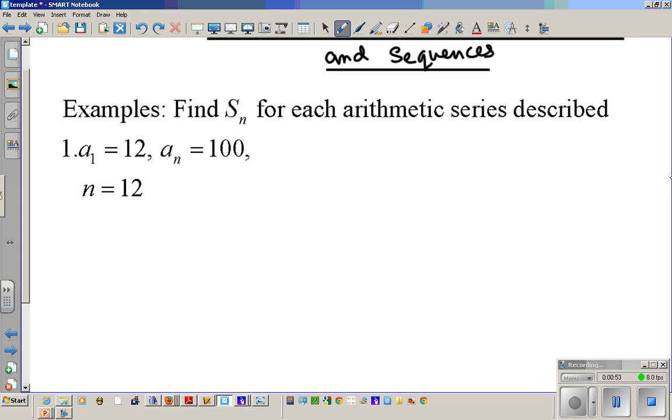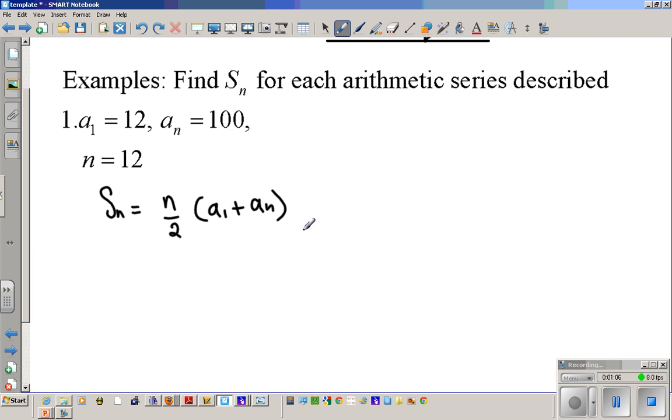So let's write down the formula for the sum of our arithmetic series. SN equals N over 2 times A1 plus AN. Remember, you have one equation, you must have only one unknown. We have four variables here, so we need at least three to solve this equation.